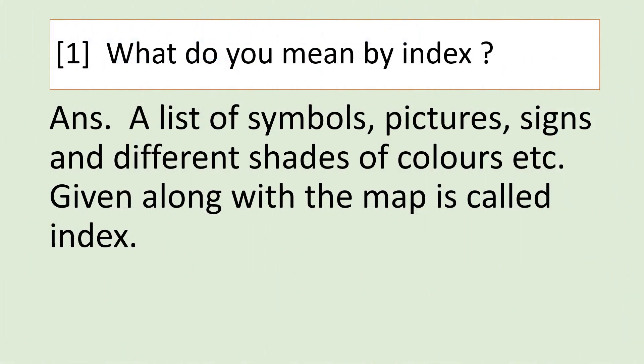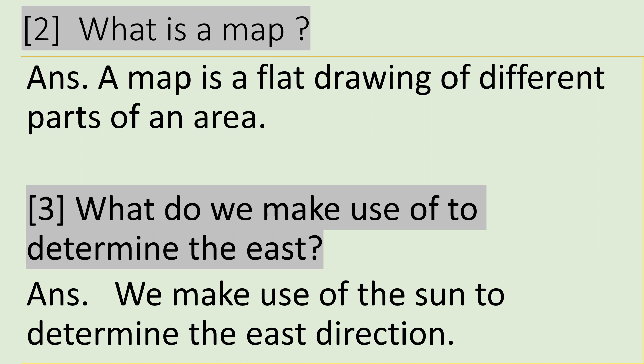Now the next question is answer in one sentence. First one, what do you mean by index? Answer: a list of symbols, pictures, signs and different shades of colors, etc., given along with a map is called index. Question number two, what is a map? Answer: a map is a flat drawing of different parts of an area. Question number three, what do we make use of to determine the east? Answer: we make use of the sun to determine the east direction.